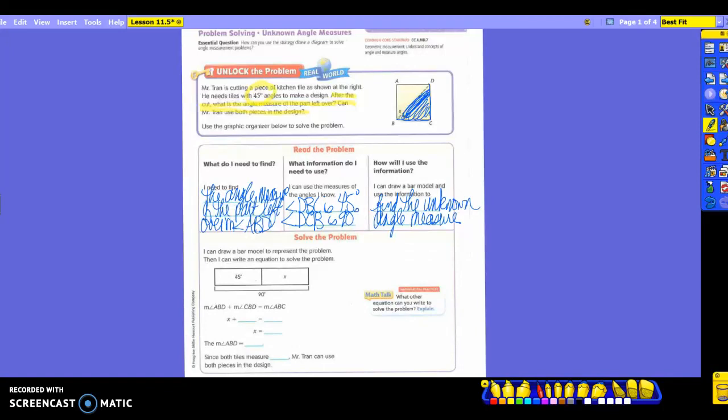Finding the unknown angle measure. Take a look at the bar model they drew. They're doing it to represent the problem. We can also write an equation to solve that problem. In bar models, they put what they know on one side, the total at the bottom. As you see, the 45 degrees from here went into this portion. The 90 degrees went down here. Is everybody watching? And if you can tell, all of your outside angles are 90 degrees. Do you see a pattern here? That's why your 90 is down here. So, your angle measure of ABD plus your angle measure of CBD will give you the angle measure of ABC.